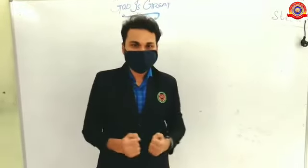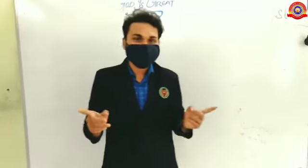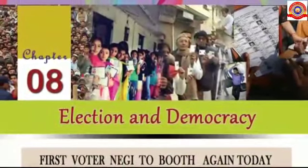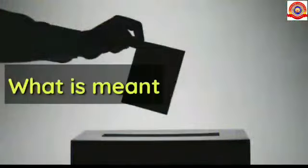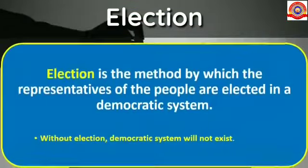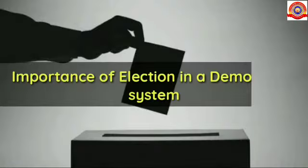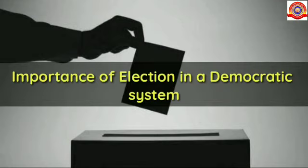Good evening students, welcome back to the class. Today we are starting a new chapter — Chapter Number 8: Election and Democracy. What is meant by election? Election is the method by which the representatives of the people are elected in a democratic system. Without election, a democratic system will not exist.